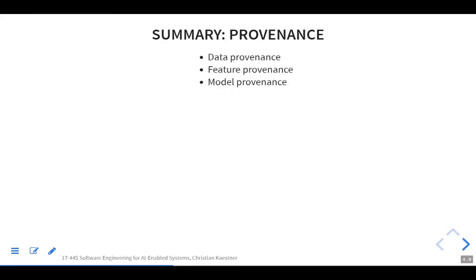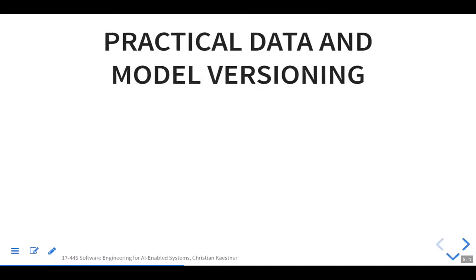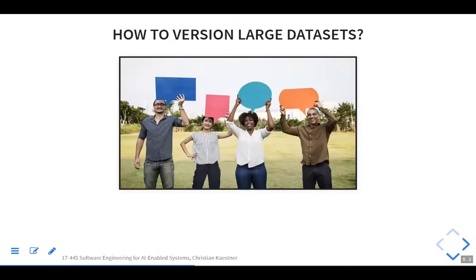We want to track data, features, and models. We need to talk about how to do that — so we want to version data and models at least. You're all familiar with Git, but there's a question of how to do this with fairly large training data. How would you version training data? Let's assume a practical setting: you're getting more and more ratings from users and your training data is maybe 50 to 100 megabytes, growing with every day.